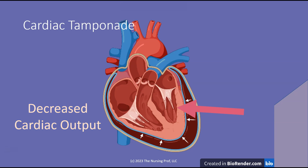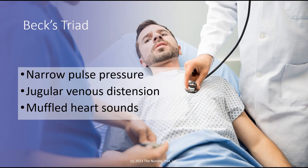The main problem that occurs with cardiac tamponade is a decrease in cardiac output, and that's what's going to be demonstrated by the symptoms we see: a narrow pulse pressure, jugular venous distension, and muffled heart sounds.